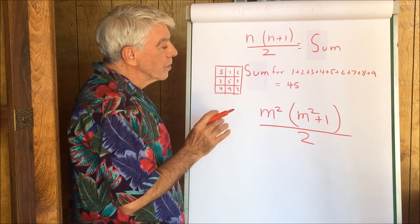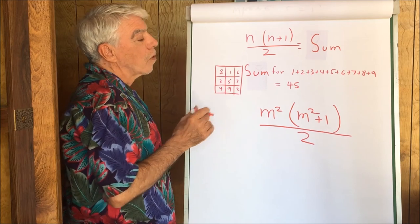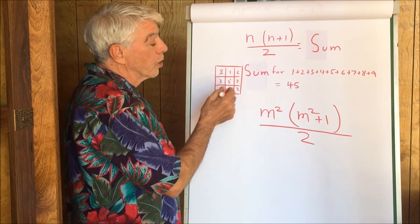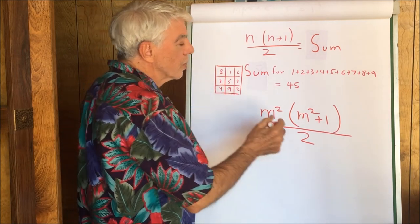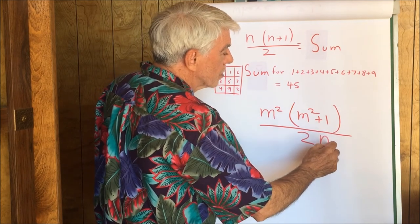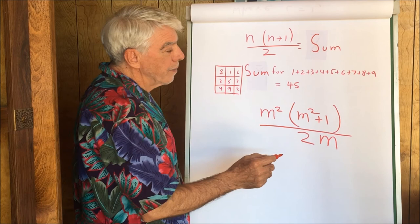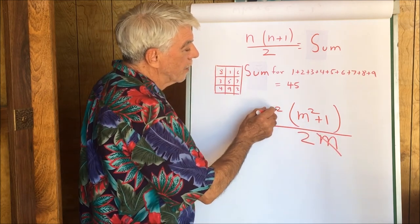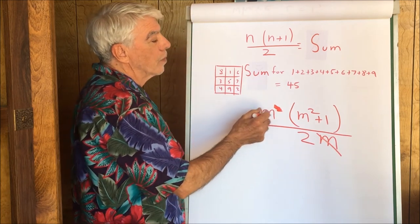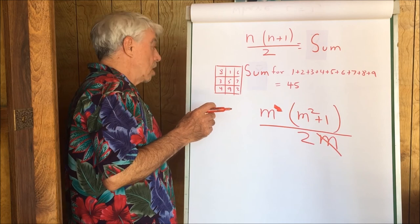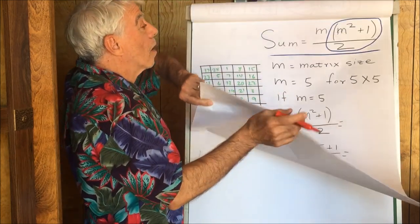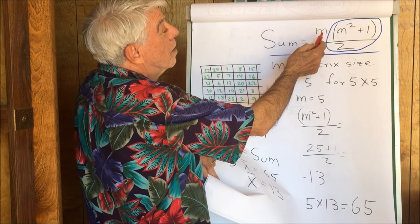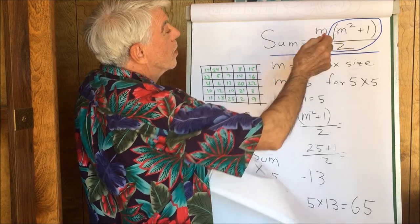Now, since the rows have equal sums, we need to divide by 3, which is the order of the matrix. If the matrix was 5, we would divide by 5. We're using the symbols, so we'll divide by m. You remember m is the size of the matrix. Divide by m, and this m goes away, and this exponent goes away. And lo and behold, we have the original equation. The sum of any row, column, or diagonal is m times the expression m squared plus 1 divided by 2.